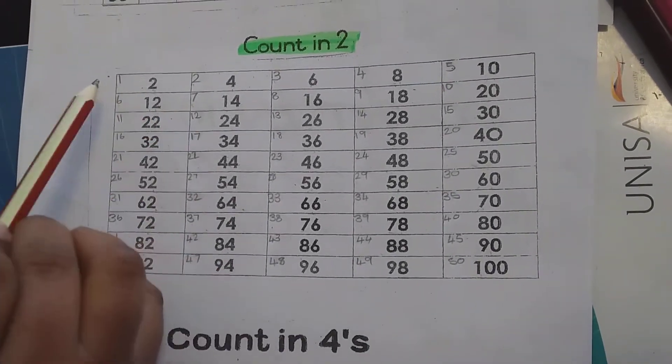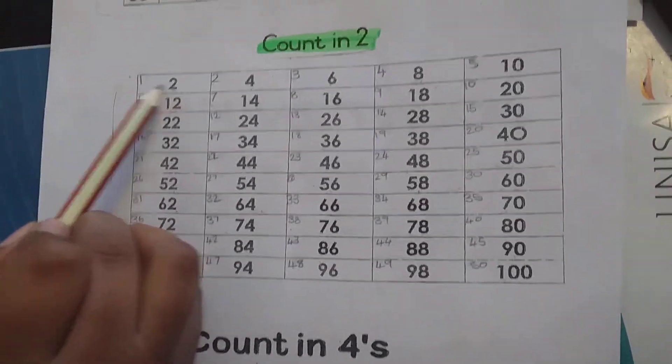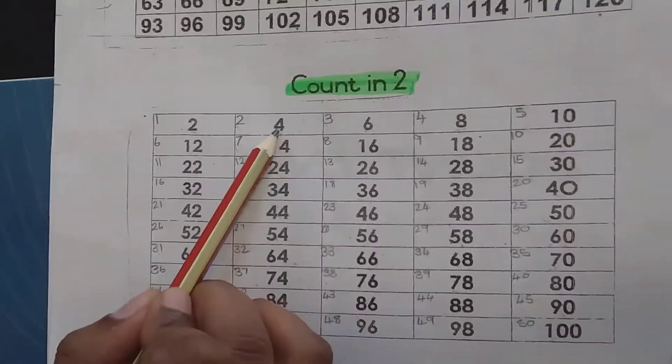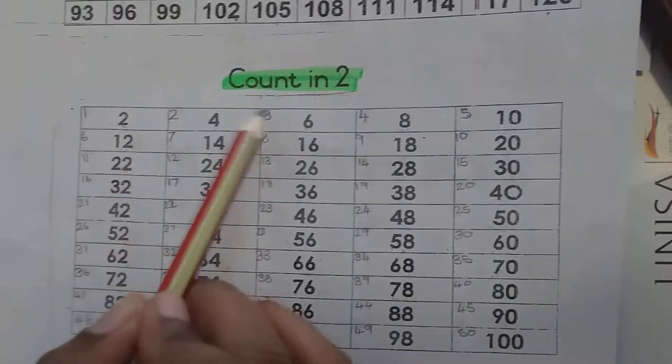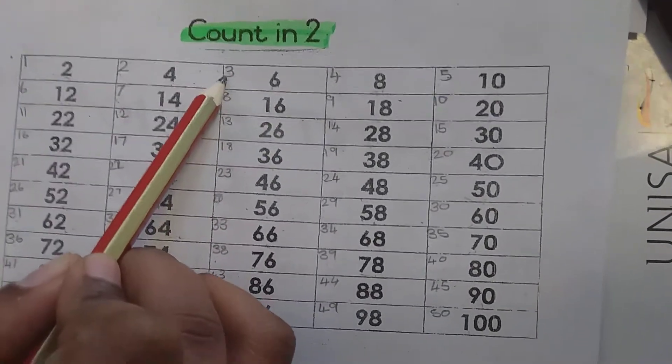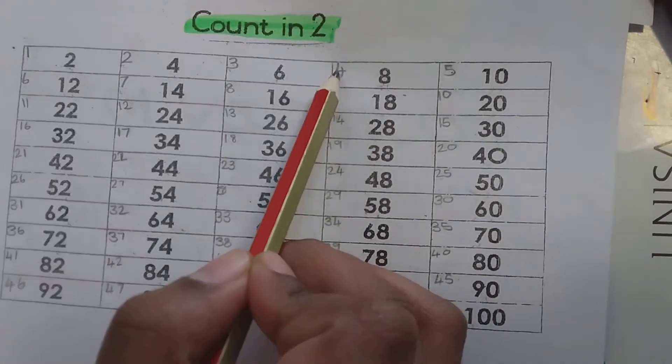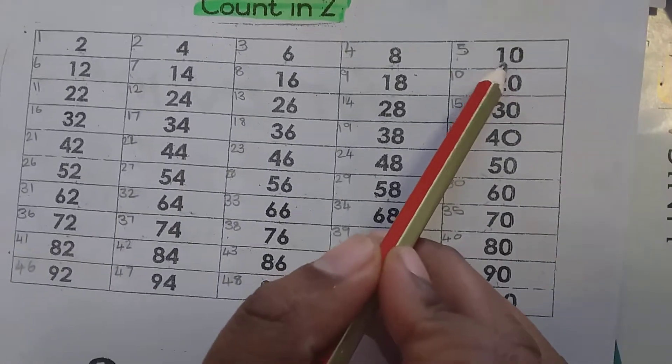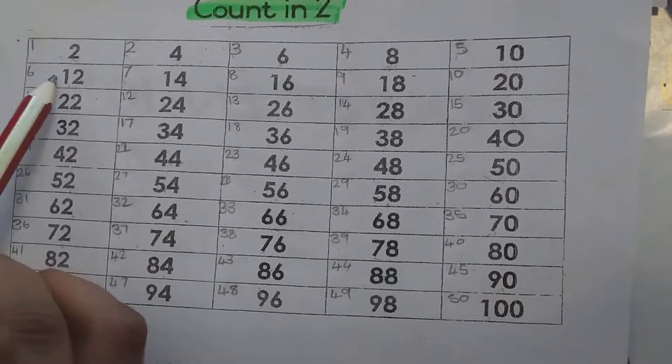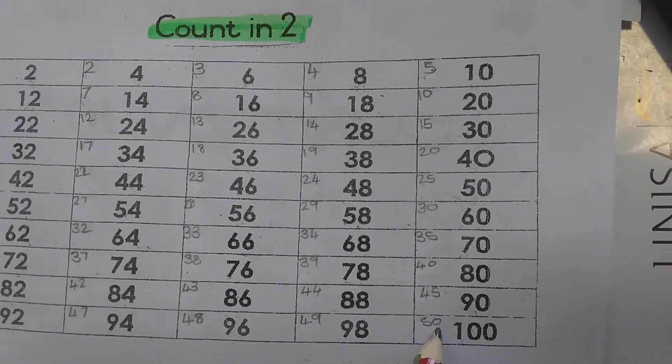Now we take note of the numbers that we wrote. Double 1 is 2, the half of 2 is 1. Double 2 is 4, the half of 4 is 2. Double 3 is 6, the half of 6 is 3. Double 4 is 8, the half of 8 is 4. Double 5 is 10, the half of 10 is 5. Double 6 is 12, the half of 12 is 6, and so on until 100 every single day.